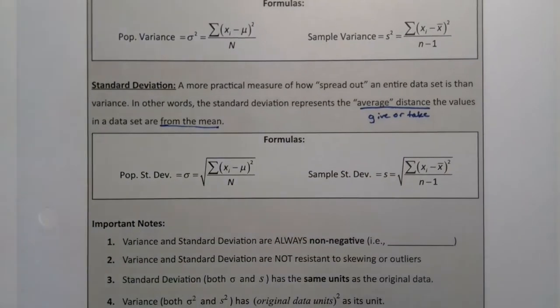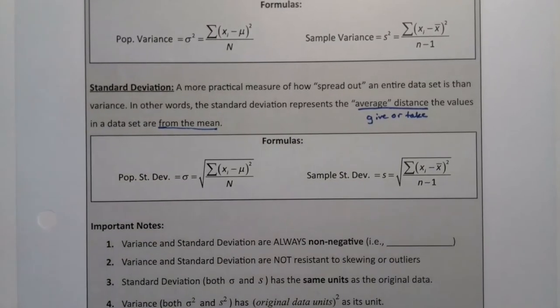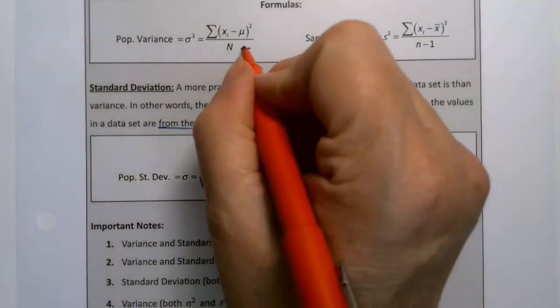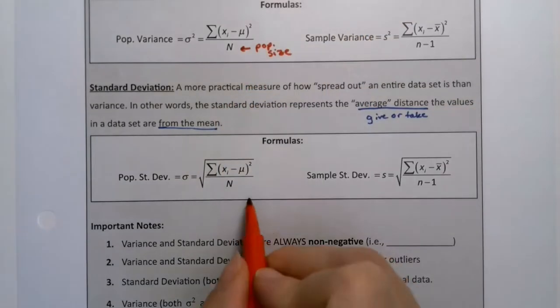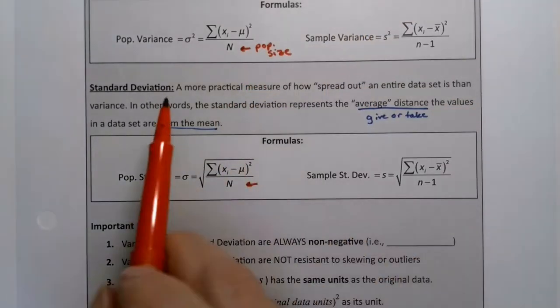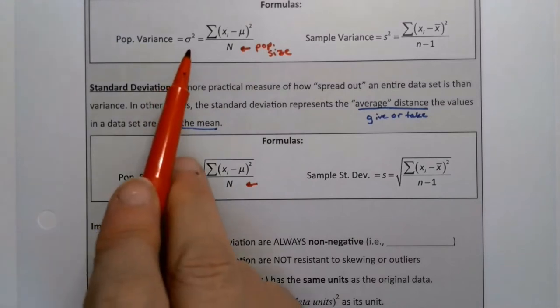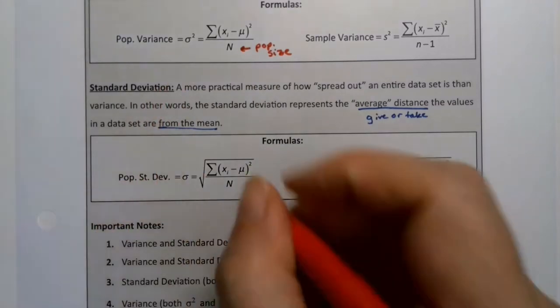Now you'll notice there are these big formulas. We don't care too much about them, other than to remind ourselves that that's the population size down there. That's why it's a capital letter. And of course, this is sigma squared. This is sigma.